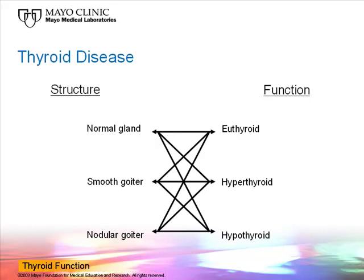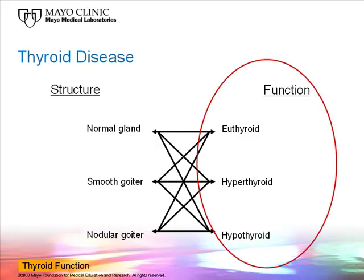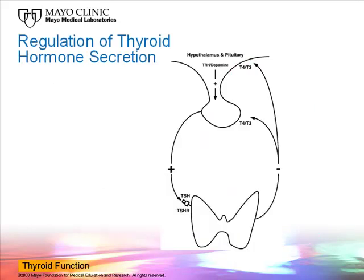The thyroid gland can have both diseases of its structure as well as its function. What we are going to look at today is simply the function. Just to remind ourselves briefly about thyroid function and its regulation: it's a typical and classical negative feedback endocrine regulation system. The pituitary gland secretes thyroid stimulating hormone, or TSH for short, which in turn interacts with the thyroid gland and makes it produce increased amounts of thyroxine, also known as T4, and triiodothyronine, also known as T3. Both of those provide negative feedback on the hypothalamus and the pituitary gland, and as their levels increase, the levels of TSH are down-regulated — a classical thermostat.